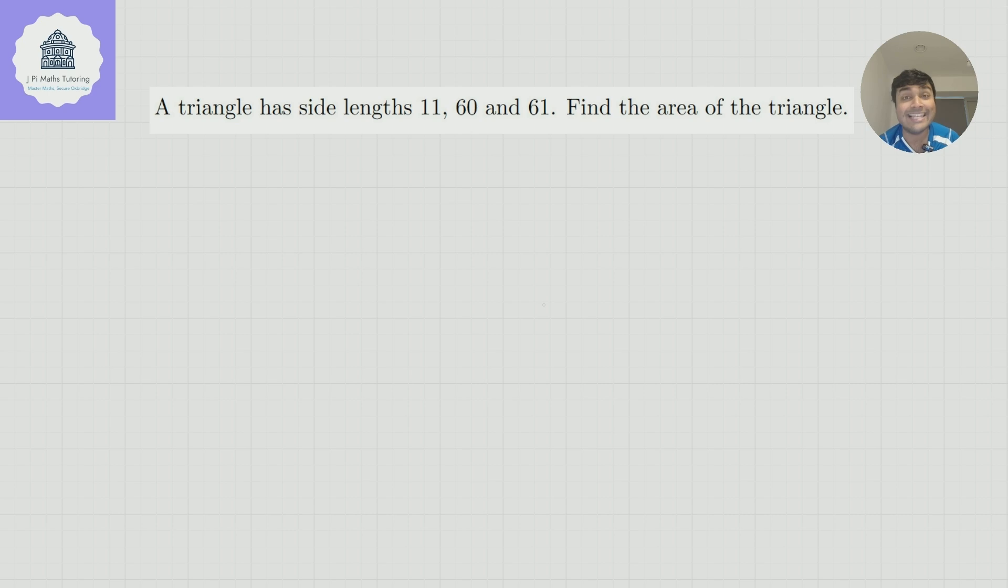Let's have a look at this one. A triangle has side lengths 11, 60, and 61. Find the area of the triangle. Now, depending on whether you've seen this or not, there's something called Heron's formula, which allows you to find the area of a triangle given three side lengths. And here we have three sides, 11, 60, and 61. So if we knew Heron's formula, we could just substitute the numbers directly into Heron's formula. But you don't need to know that for the TMUA or the MAT. But it is a useful rule to know.